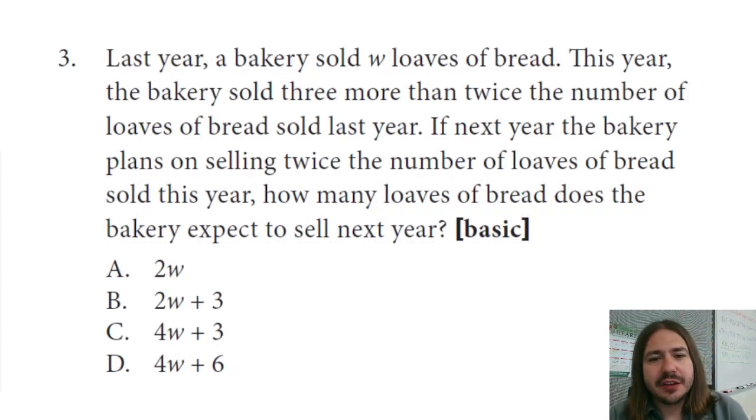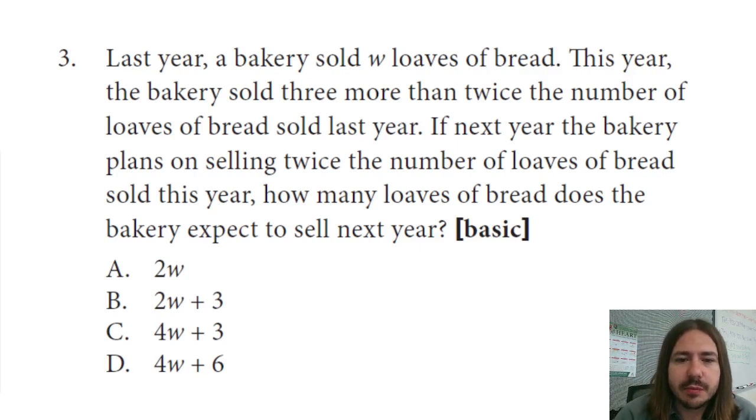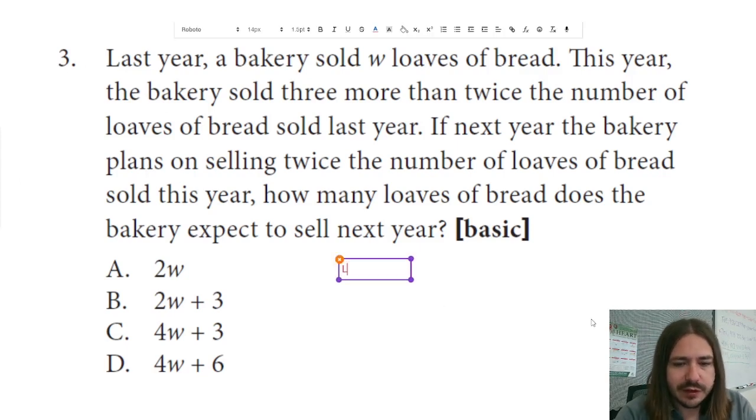Number three says, last year a bakery sold W loaves of bread. This year the bakery sold three more than twice the number of loaves of bread sold last year. If next year the bakery plans on selling twice the number of loaves of bread sold this year, how many loaves of bread does the bakery expect to sell next year? Okay, so last year we sold W loaves of bread.